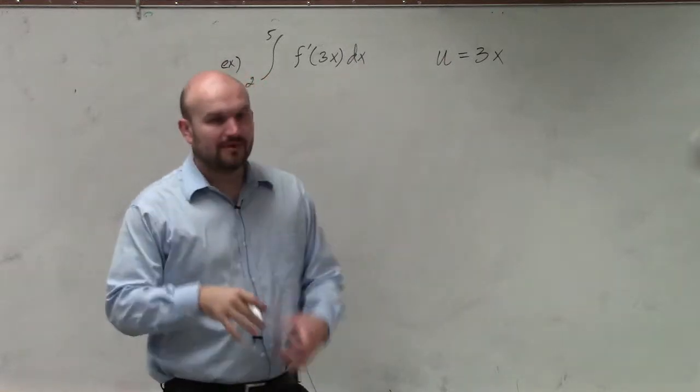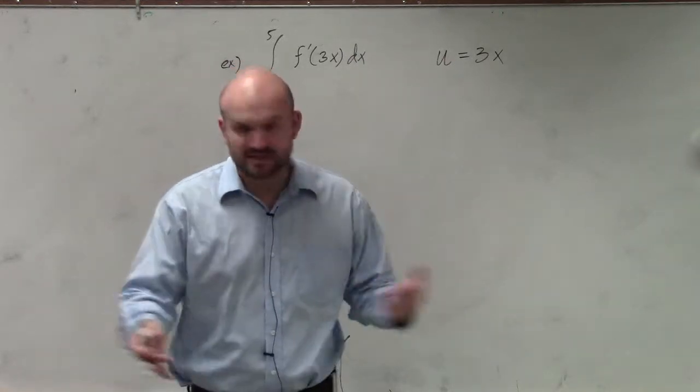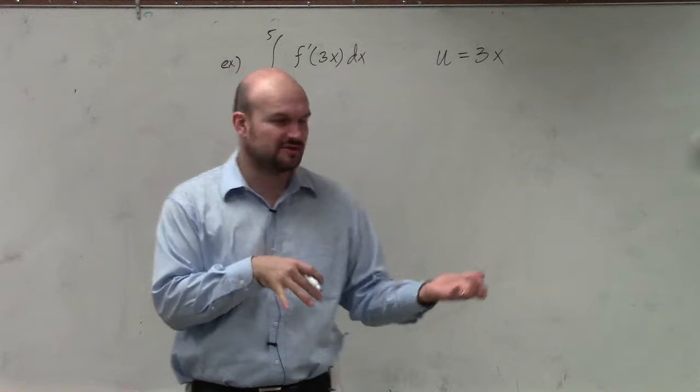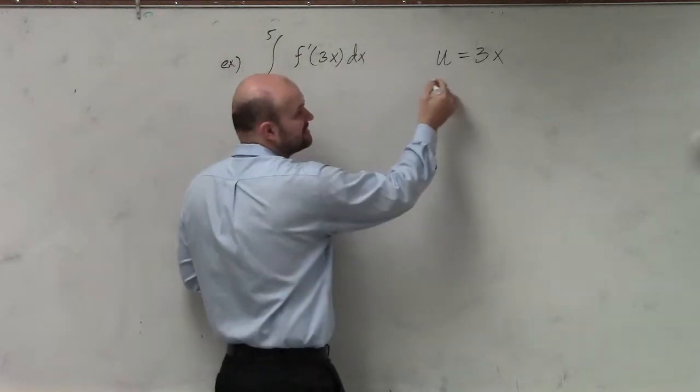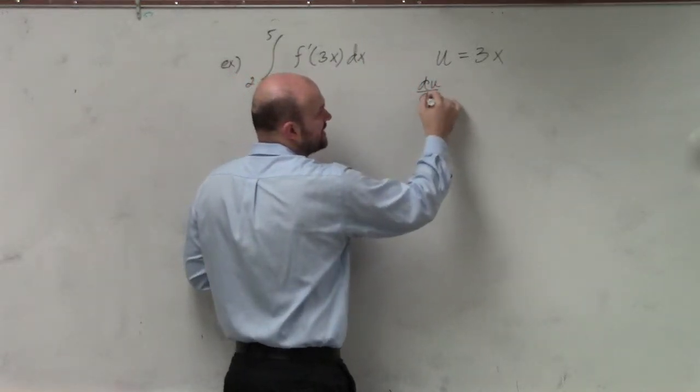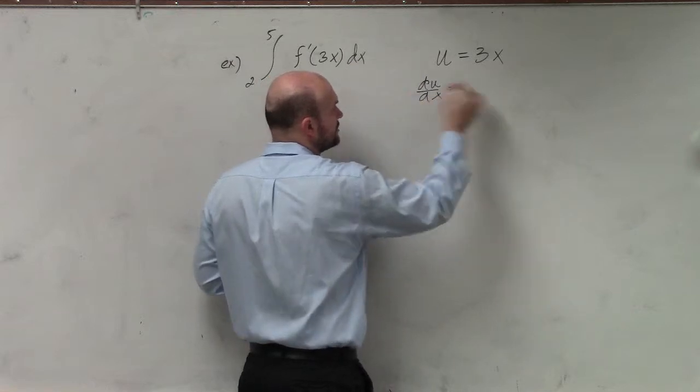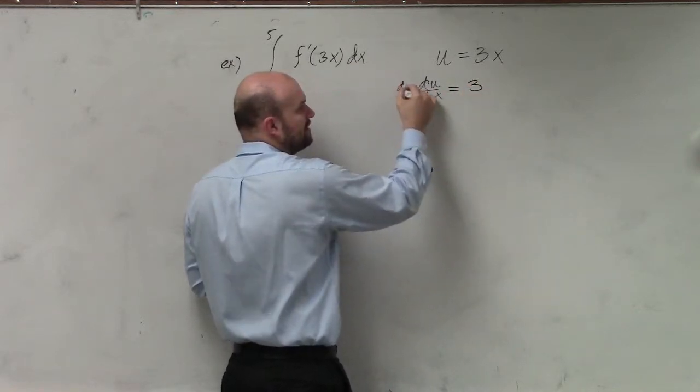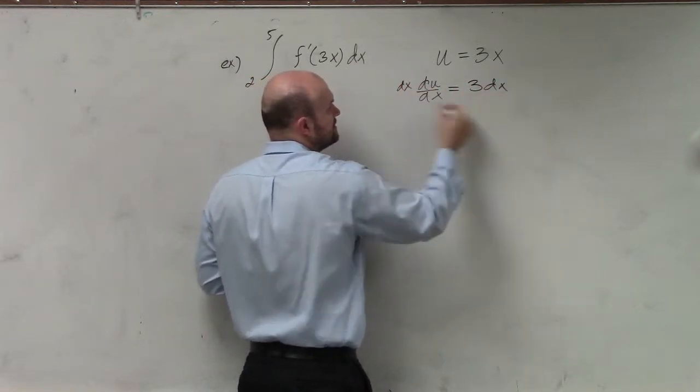Now I'll just do this one more time, but then from now on, I'm going to do the shortened version of this. Remember, we want to take the derivative of this, so we do du/dx, which is equal to 3, and then we multiply by dx on both sides to solve for du.